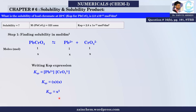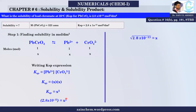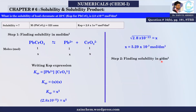I have solved it. KSP equals x times x, which is x². I put in the given value of KSP and take the square root of both sides. The answer is 5.29 × 10⁻⁷ mol per decimeter cube. This is the solubility — you can also call it molarity or concentration.